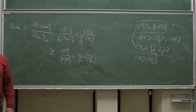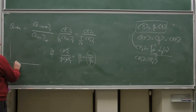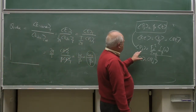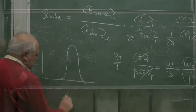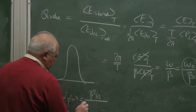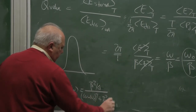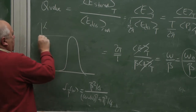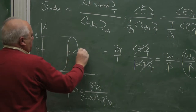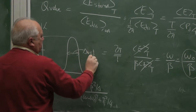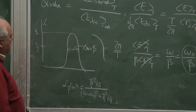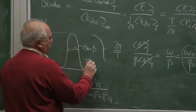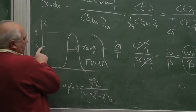Something interesting: the power dissipated or power input has a Lorentzian behavior. The Lorentzian L_beta(omega) equals (beta squared over 4) divided by ((omega minus omega_0) squared plus beta squared over 4). At half maximum, the full width is delta W equals beta. This is the full width at half maximum of the resonance.